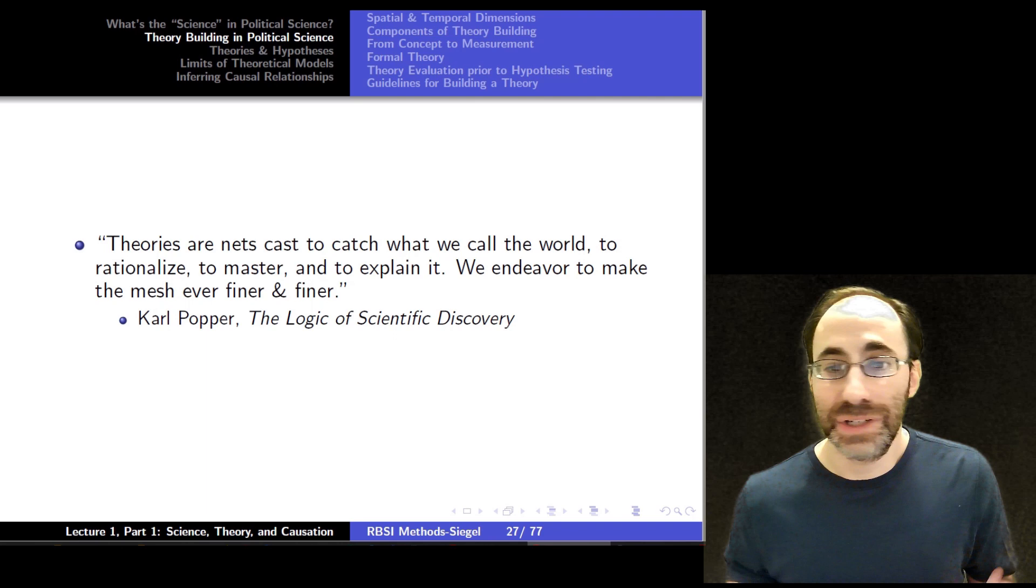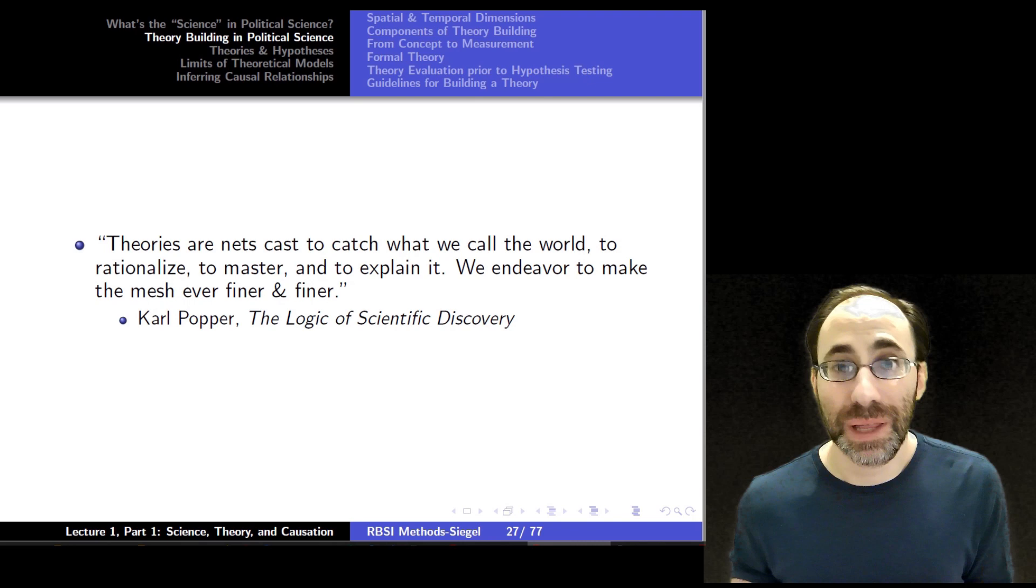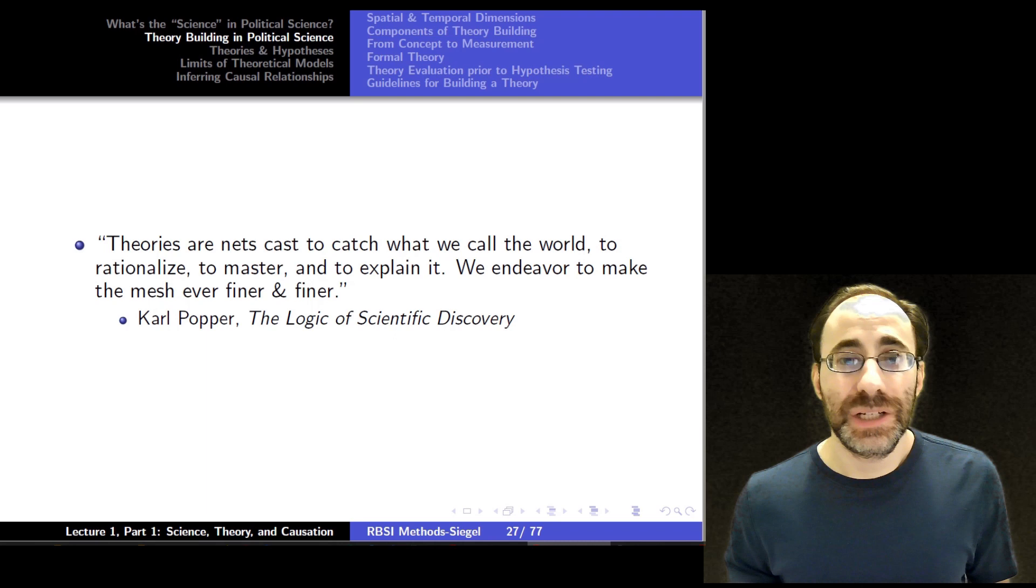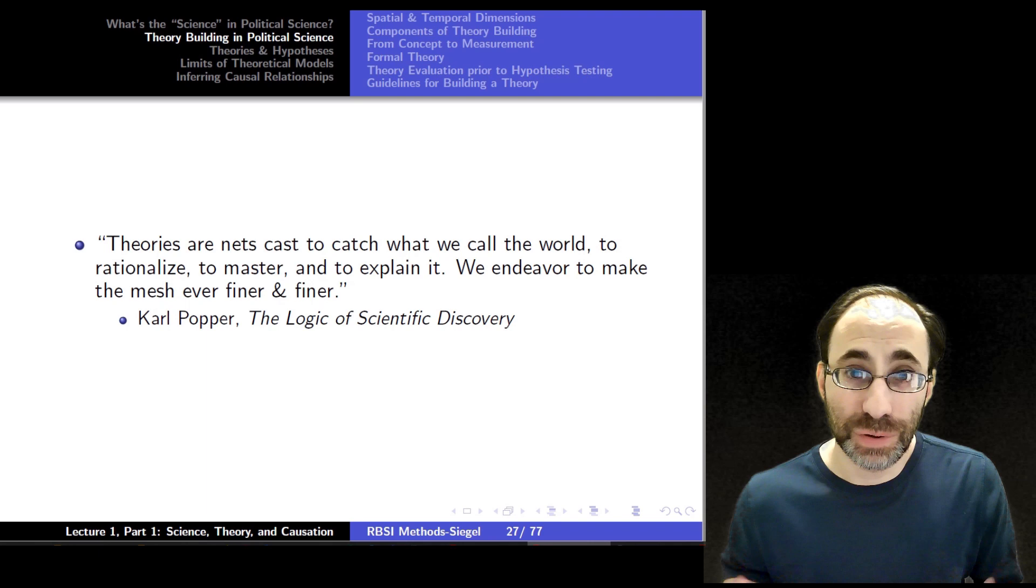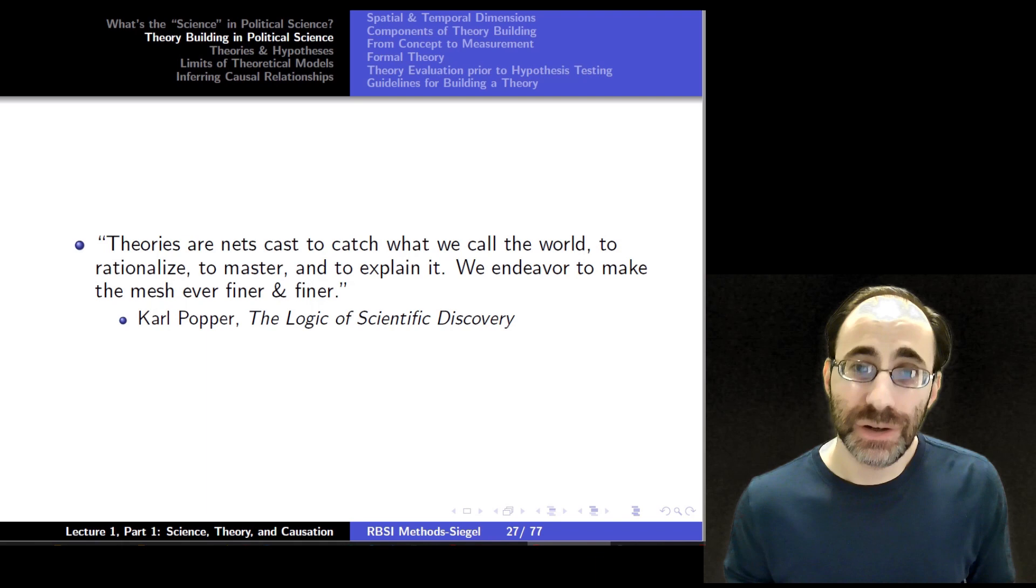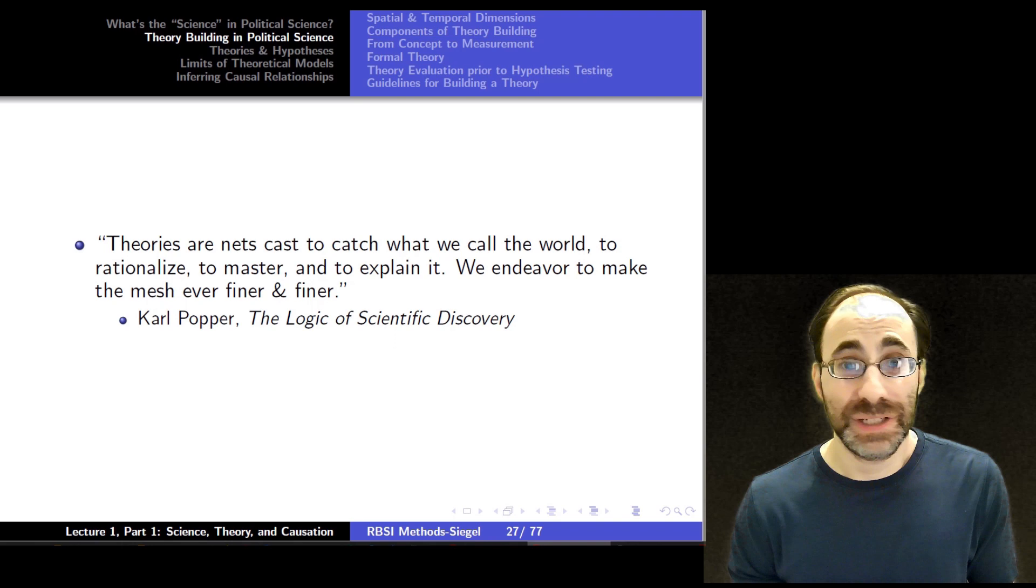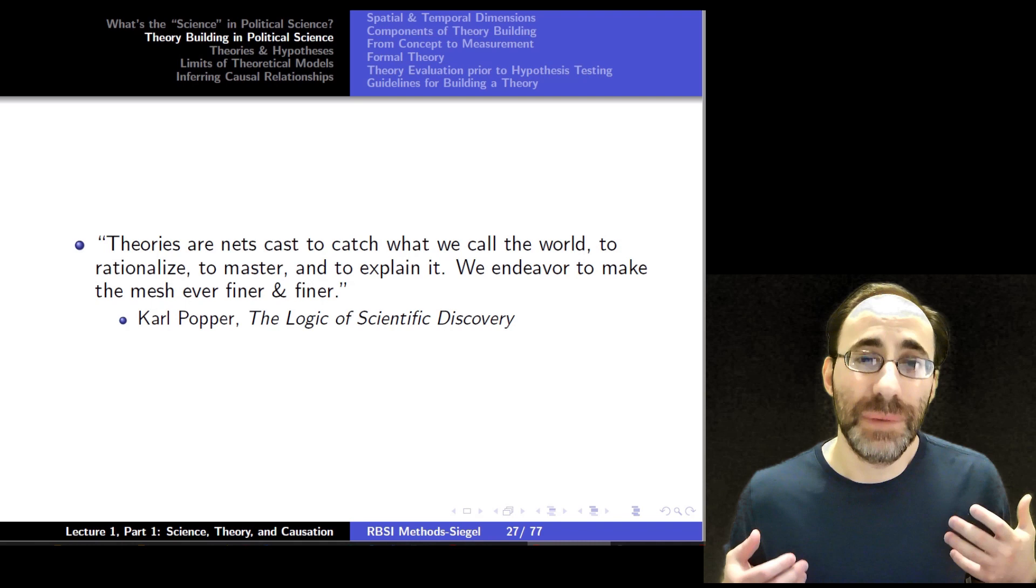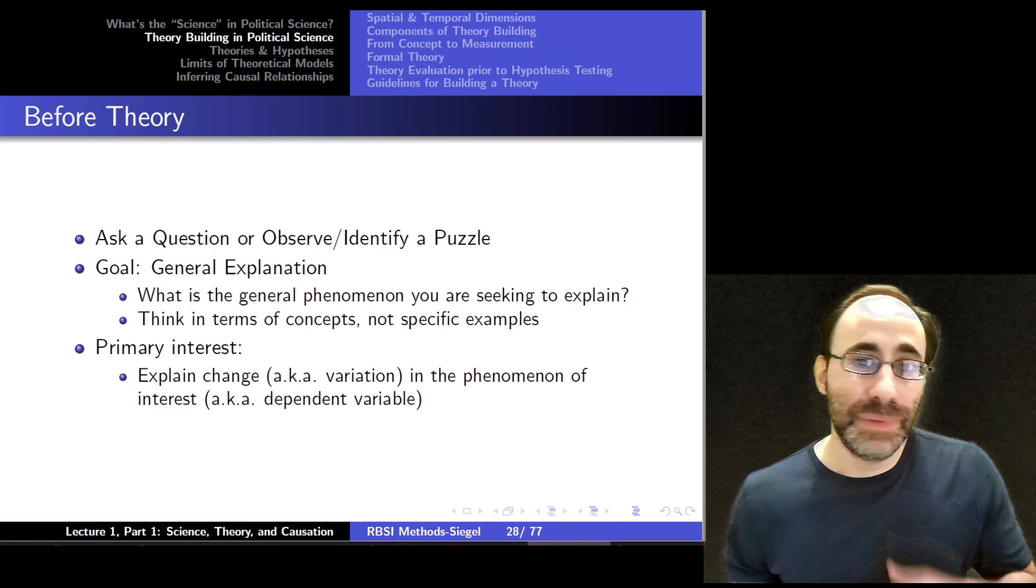So I'll start with a quote here. What theories are, they're nets to cast, to catch what we call the world, to rationalize, to master, and to explain it. We endeavor to make the mesh ever finer and finer. This is really just expressing what we've talked about so far, which is that our goal as scientists is to improve incrementally, to consistently make our theories better, clearer, to explain more of the world while getting less of it wrong. Usually most of science is the slow march of progress that builds on itself.